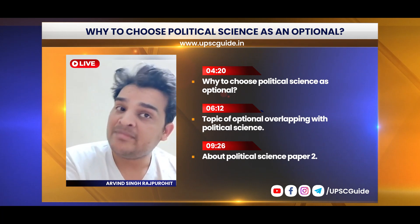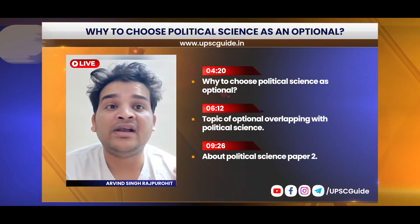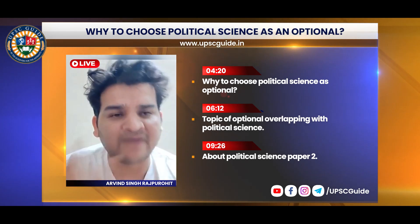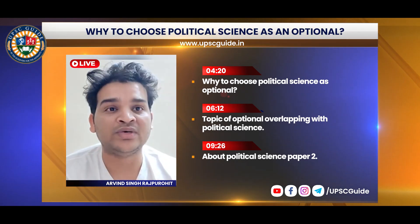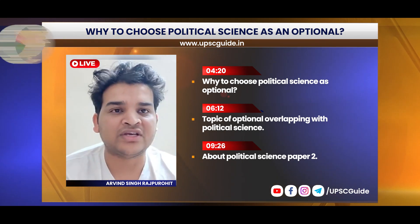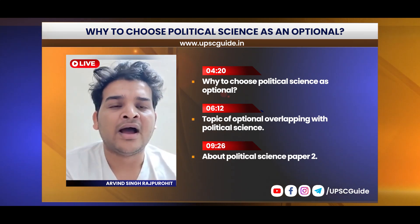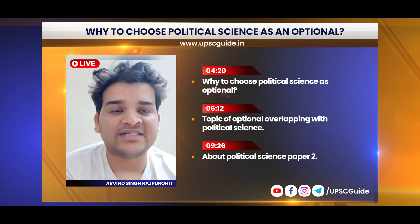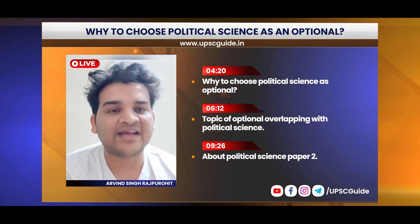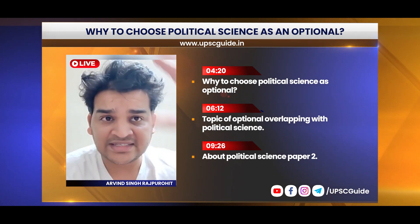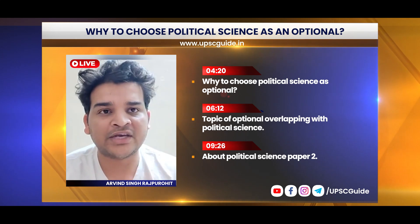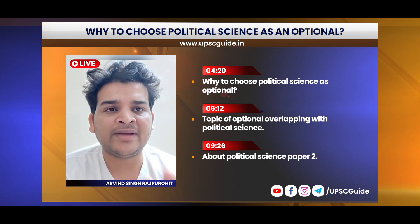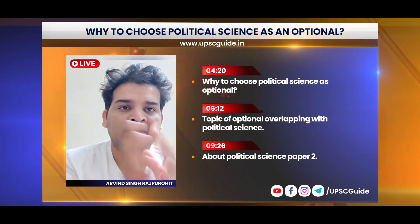In Paper 2 Part B, the focus is on India's relationship with the world. There are five major powers: India-USA relations, India-China relations, India-Japan relations, India-European Union relations, and India-Africa relations. Then there are India-SAARC neighboring countries relations. You also have to study different doctrines. So this covers your entire political science syllabus.